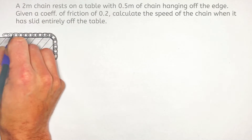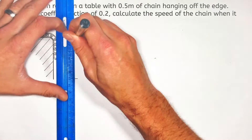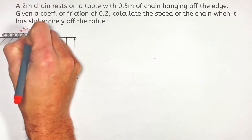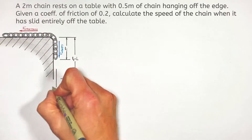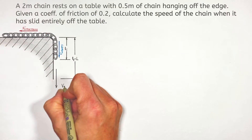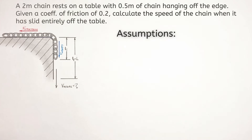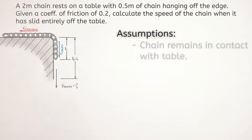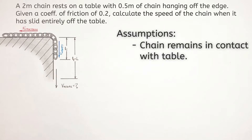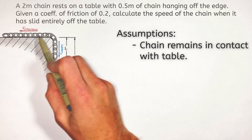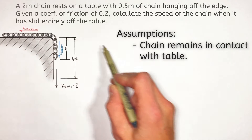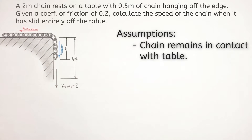In this version of the problem, we're going to say there's some friction between the chain and the table, and we're going to solve for the final velocity of the chain just as it leaves the table. The first assumption is that the chain is going to remain in contact with the table even after it slides off the edge — that is, this edge of the chain isn't going to go shooting off to the right as it speeds up horizontally coming off the table.